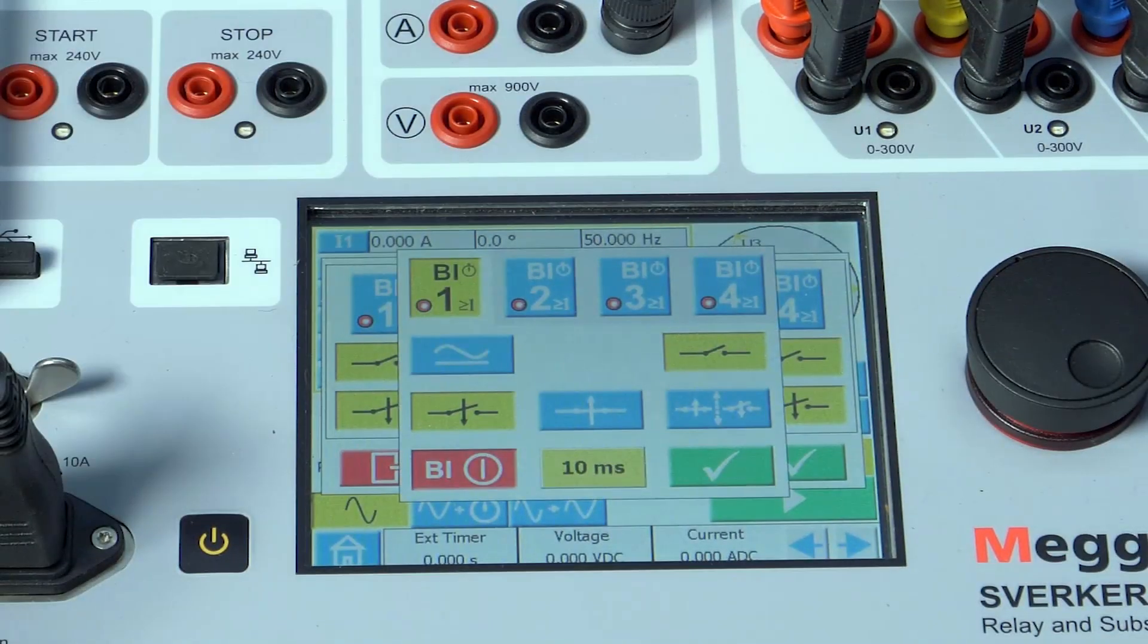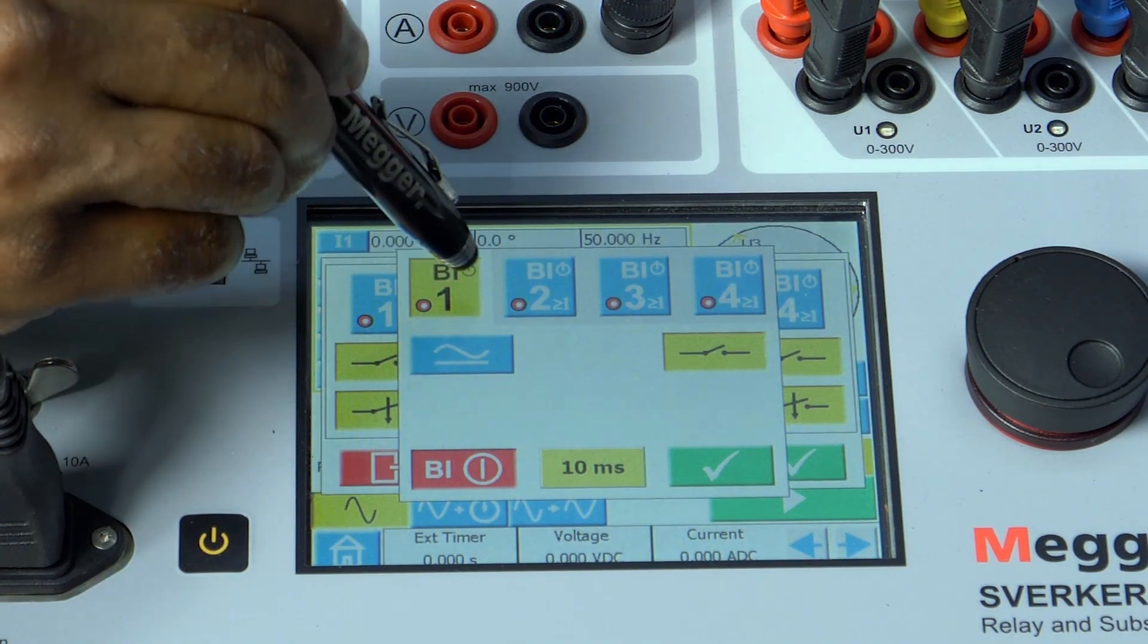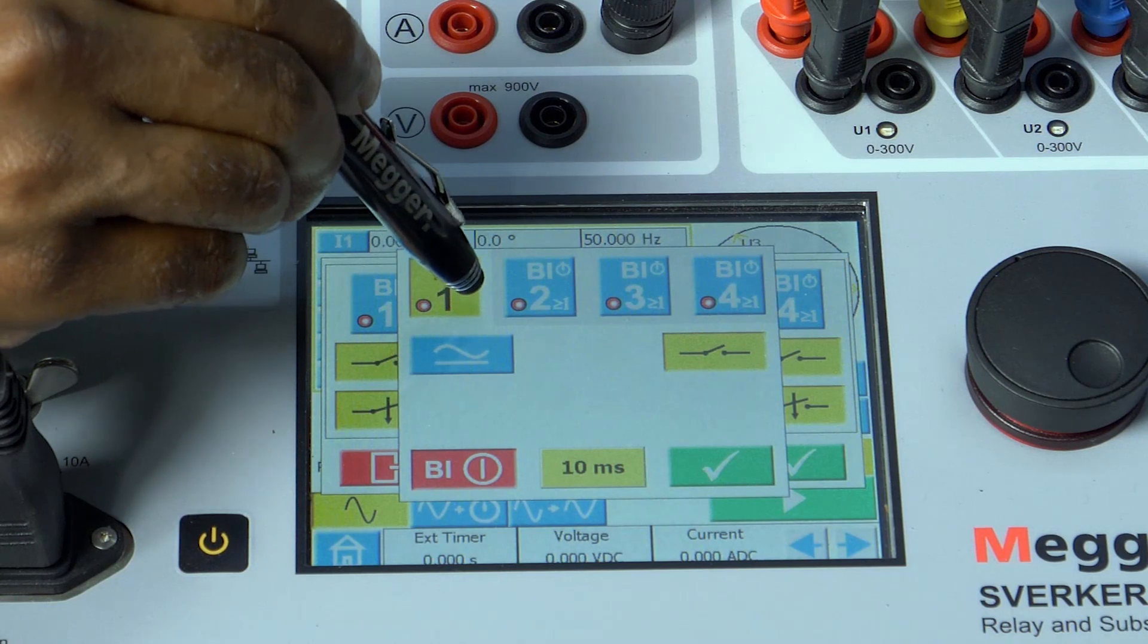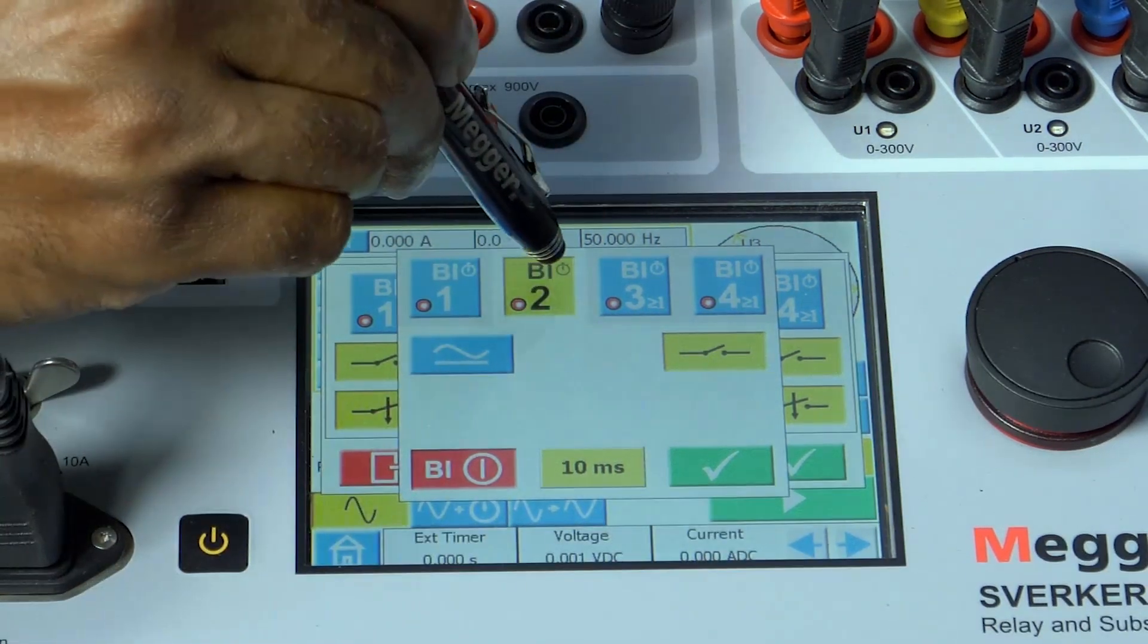Verify that symbols such as ampersand, greater than 1, and none keep toggling based on each press. The same configuration can be repeated for each binary input.